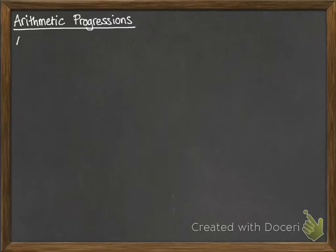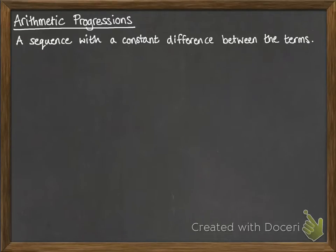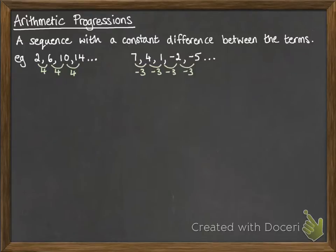Back to arithmetic progressions. This is a sequence where you have a constant difference between the terms. For example, 2, 6, 10, 14, they go up in 4s in a fixed amount. Or this one, where it's going down in 3s. The key here is that the difference between the terms is always constant, and that's called an arithmetic progression. You may have talked about them as being linear sequences, because the nth term would be a linear expression. That was back when you were doing this in IGCSE.